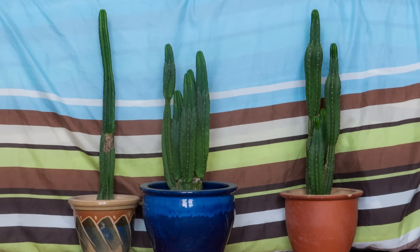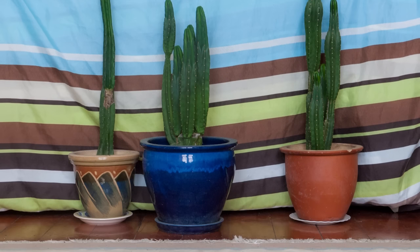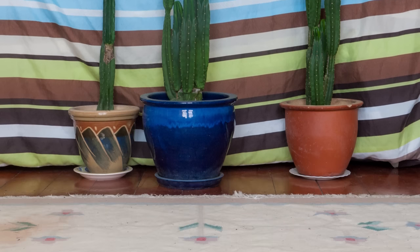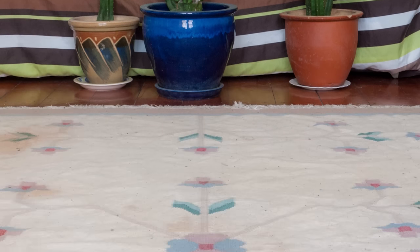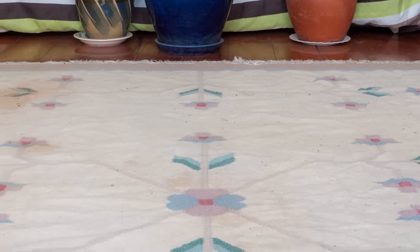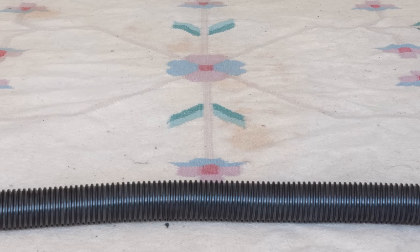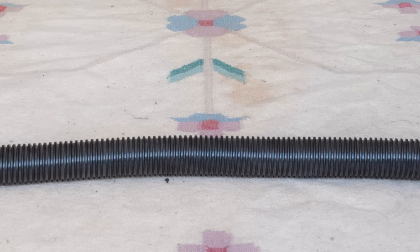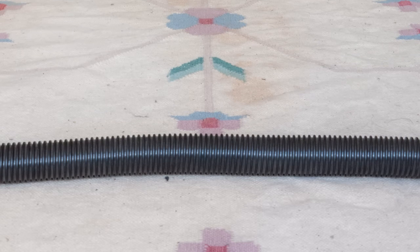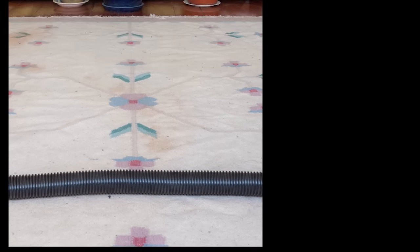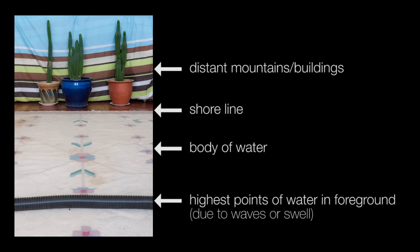The cacti represent say the mountains, and the vacuum cleaner hose represents the waves or the swell. At this height you can obviously see the bottoms of the cacti mountains all the way down to sea level, or the floor, as you'd expect.